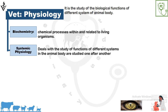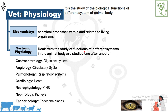The second branch is systemic physiology, in which we study about the functions of different systems of the animal body separately. Based on the different systems of the animal body, systemic physiology is divided into: gastroenterology — the physiology of the digestive system; angiology — the circulatory system; and pulmonology — the physiology of the respiratory system.